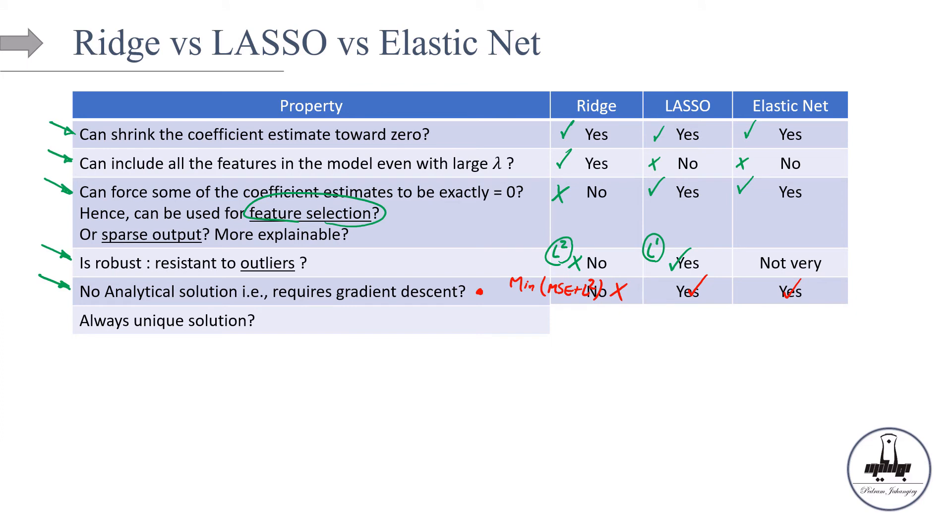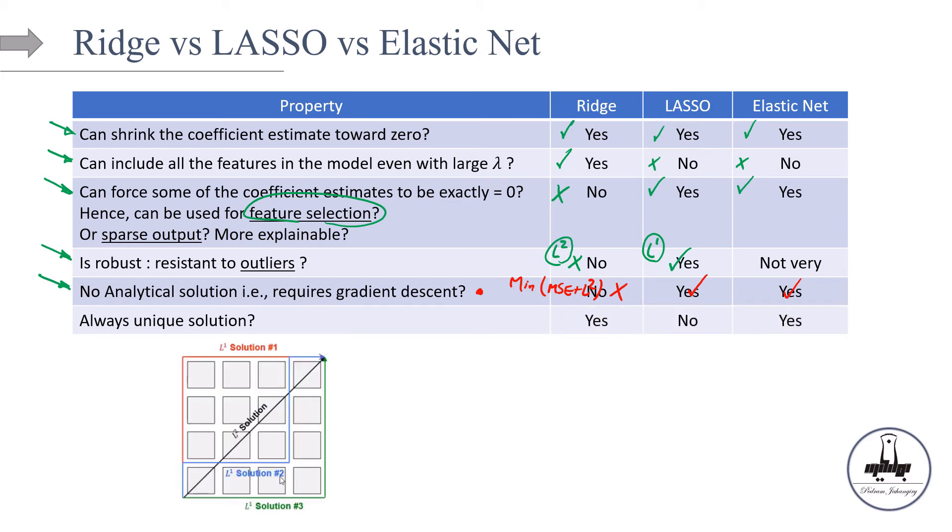And then finally, let's talk about if there is always a unique solution or not. Remember, in ridge, we are using L2 norm. And with L2, there's a unique solution. If I want to go from A to B, there's a unique solution for that. And for that reason, in ridge regression, there's a unique solution. However, for lasso, we can have solution number one - this is L1, solution number two, solution number three. This is our Manhattan distance. I can go like this from A to B. So this is another solution, solution number four. So for that reason, there is no unique solution for lasso. And you might want to think that elastic net is a combination of ridge and lasso, so why is there a unique solution for elastic net? Well, the discussion is beyond the scope of this conceptual machine learning course, but there's a paper written around 2005, I believe, that mathematically proved that there is a unique solution for elastic net optimization problem.